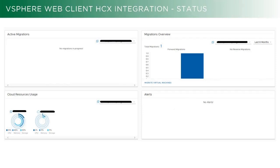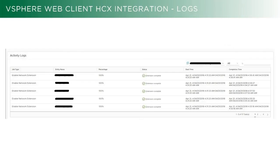You get a bunch of information when you click in. You can see any active migrations that are going on, how many migrations have occurred, and if you had multiple vCenters or multiple SDDCs hooked in, you can see cloud resource usage across all your different environments. You can also see any active alerts in that status window. There are also activity logs, which is nice from an audit perspective — you can look back and see what was done, exact times, when networks were extended, when migrations were kicked off, and when replication jobs started. You don't have to log into a command line or dump logs to find it.